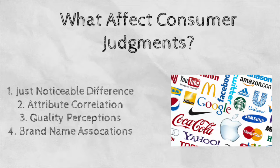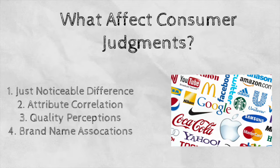The second issue is attribute correlation, which is the perceived relationship between product features. The third is quality perception: objective quality refers to the actual quality of a product that can be assessed through industry specification or expert rating, while perceived quality is based on consumer perceptions. The fourth is brand name associations — brand names have an impact on consumer judgments, and unusual product names also influence consumer judgments. The fifth is consumer personality, as personality traits affect consumer judgments.